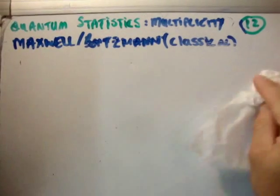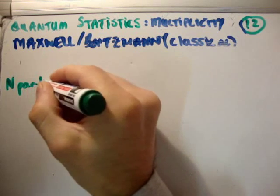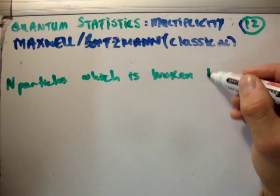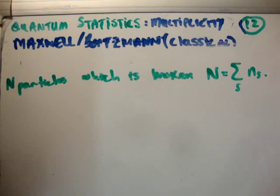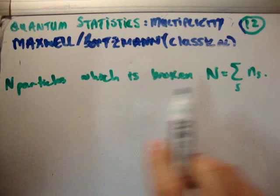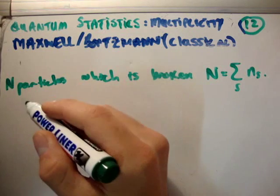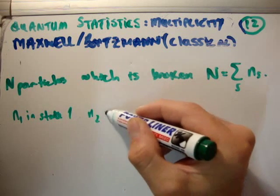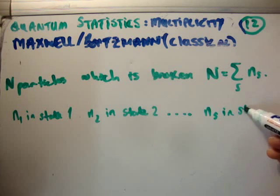Let's suggest that we have capital N particles in total. So N is equal to the sum over S of N sub S. What we're saying is we're going to break it down. Put N sub 1 particles in state 1, N sub 2 particles in state 2, N sub 3 particles in state 3, and so on.